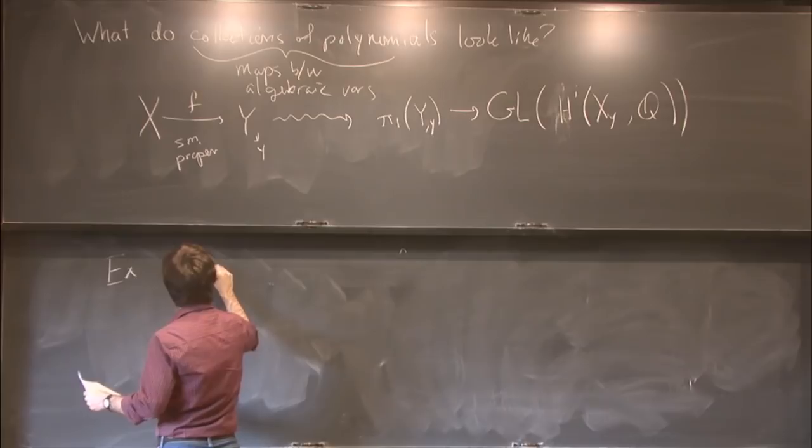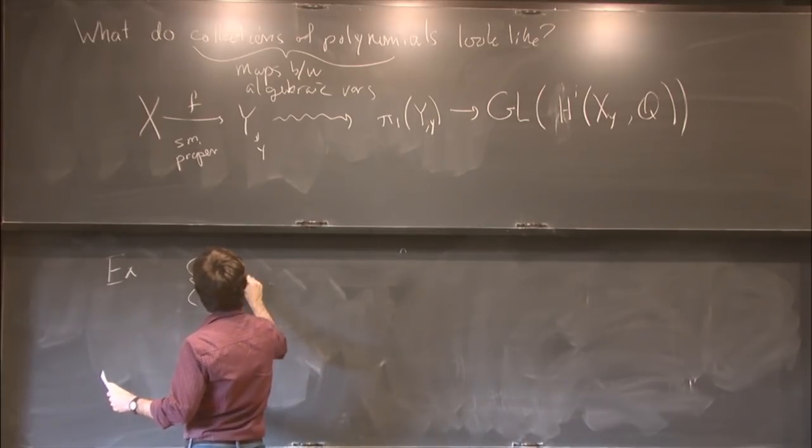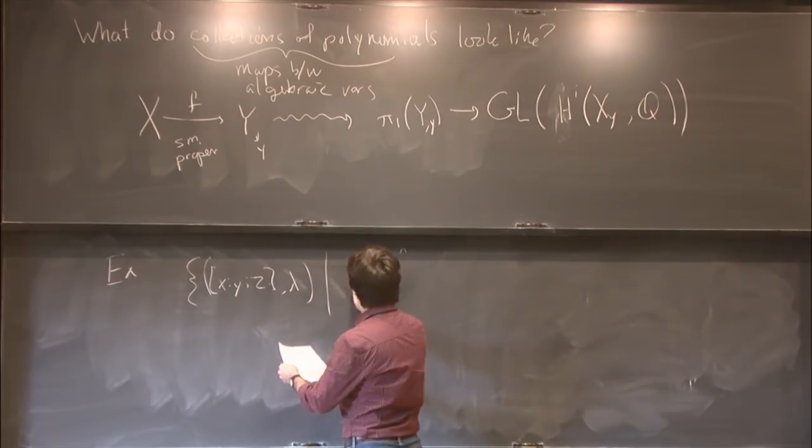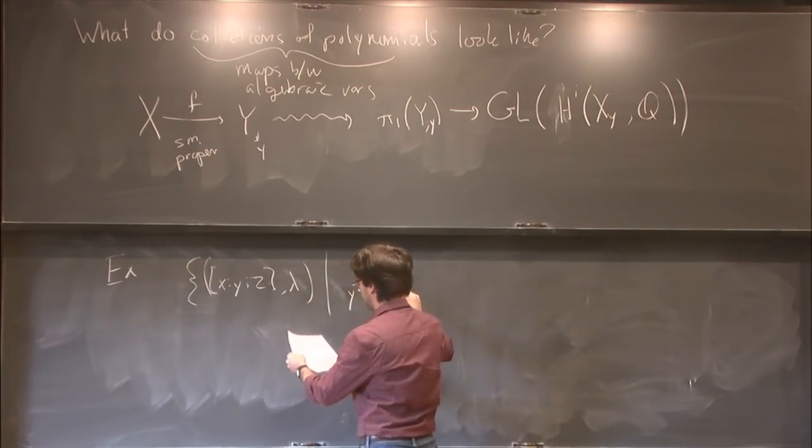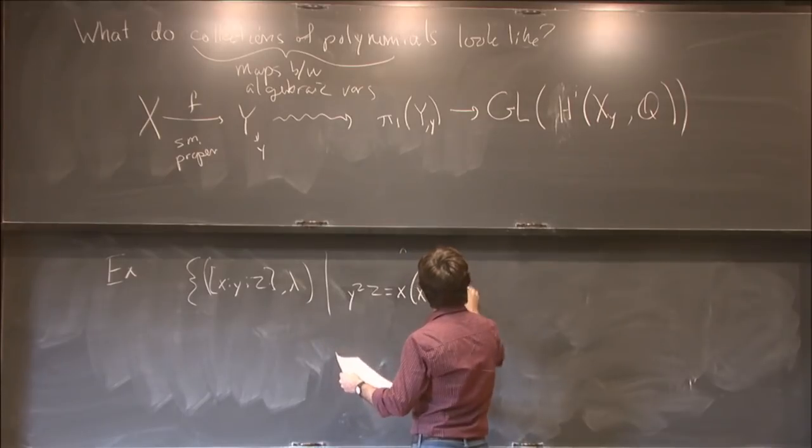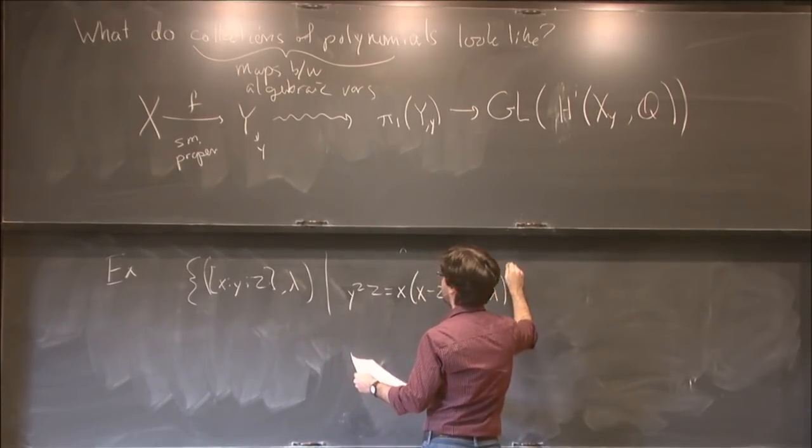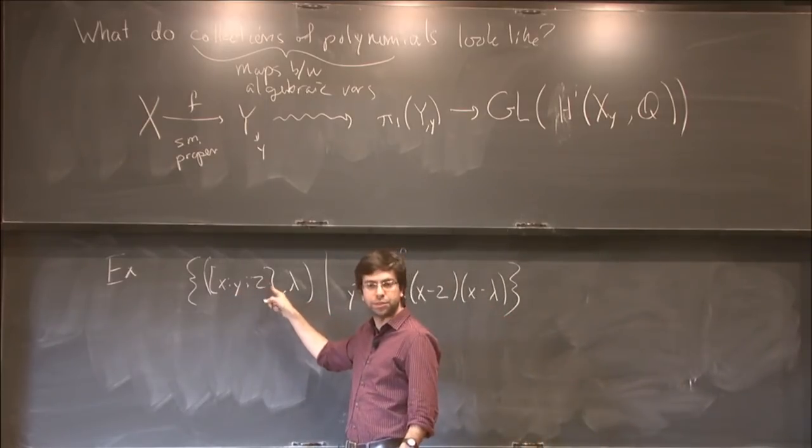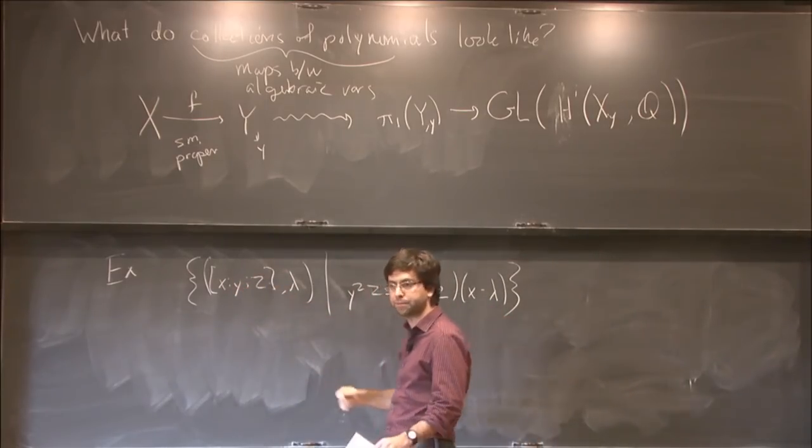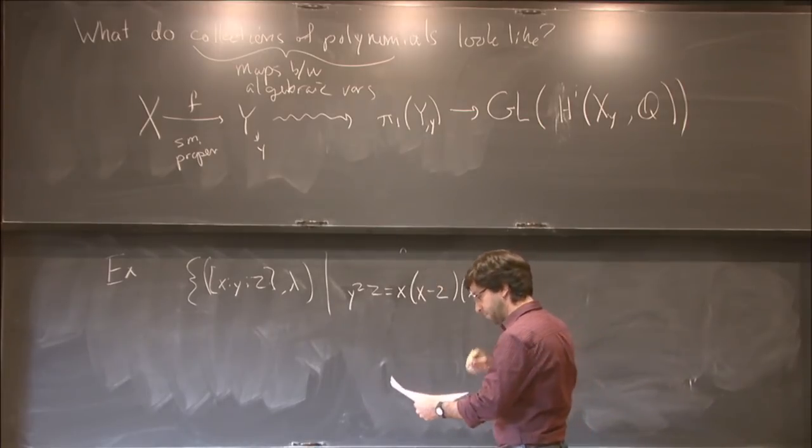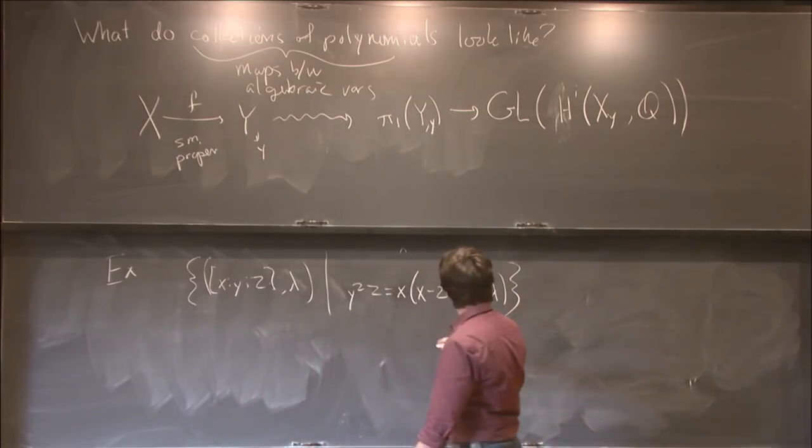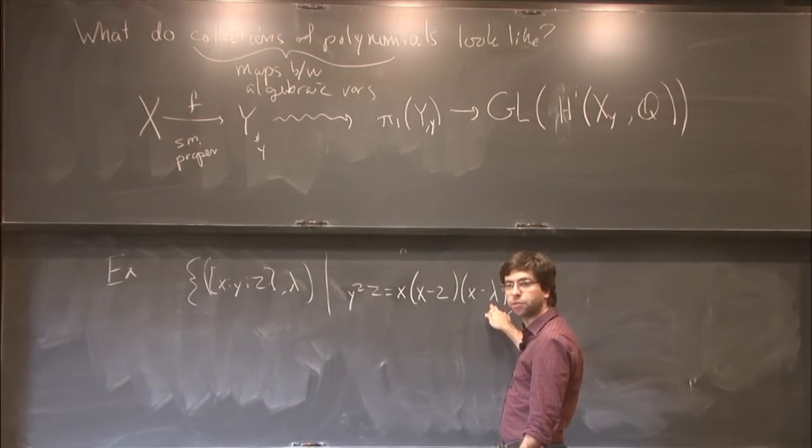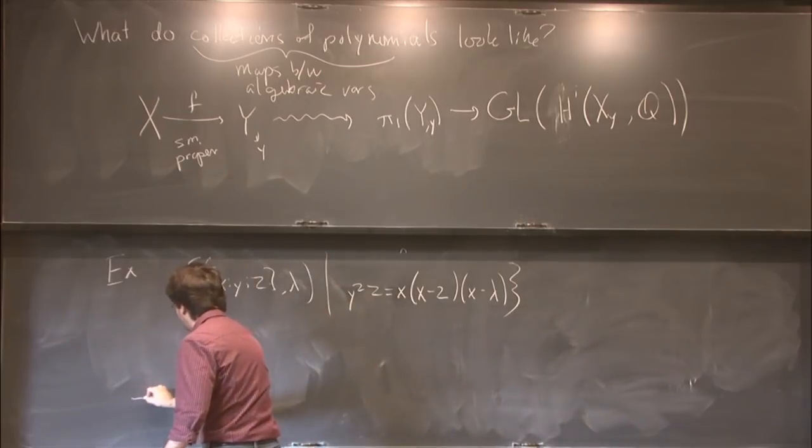We'll take the set of x, y, z, and lambda, such that y squared times z is x times (x minus z) times (x minus lambda). This notation means that I view x, y, and z as being well-defined up to scaling, and not all zero. So let me draw a picture of this. If I fix lambda, this defines an elliptic curve, a curve of genus 1,